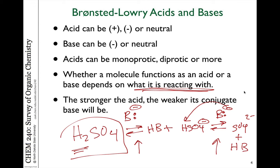Water acted as a base in the previous example, but I'll show you where water acts as an acid because it's reacting with something which is a stronger base than it. Another thing to keep in mind: the stronger the acid, the weaker its conjugate base will be. The anion generated by deprotonating the acid will be more stable if the acid is stronger — those two go hand in hand.